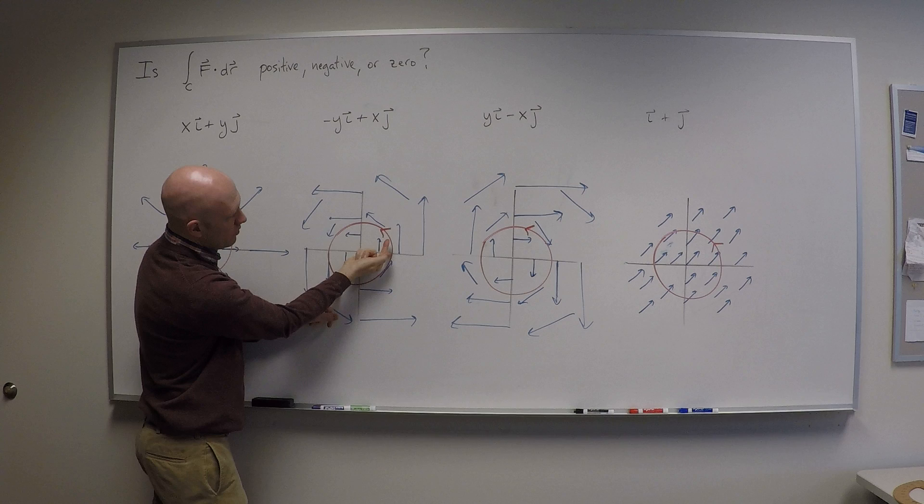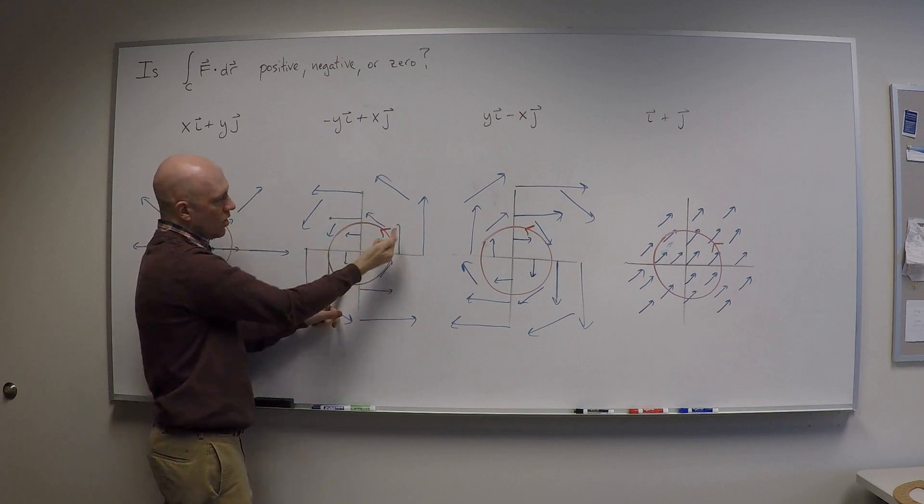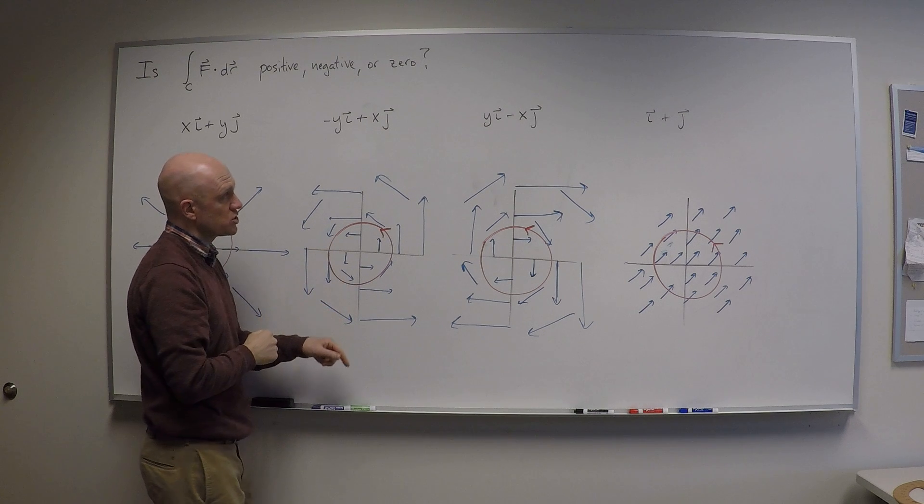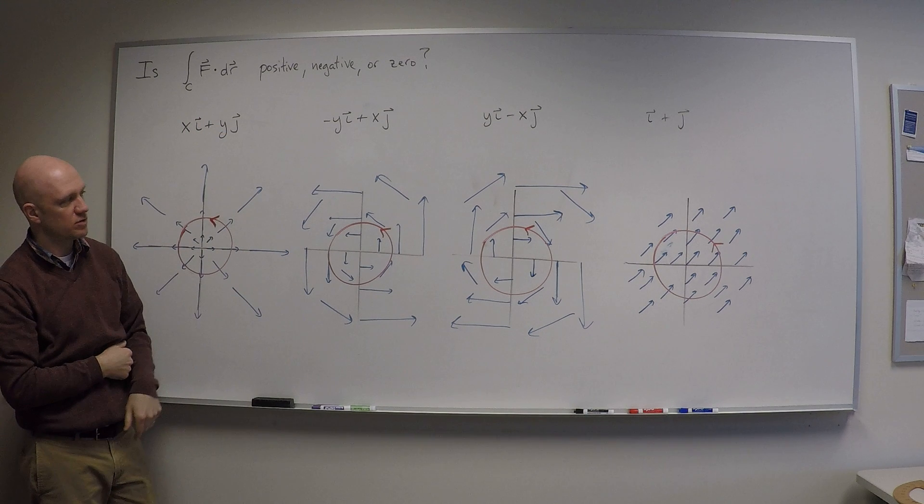As I go around, everywhere the vector field is pointing in the same direction as my motion. I'm going with that vector field, and therefore I should have a positive result for the integral of f.dr around that vector field.